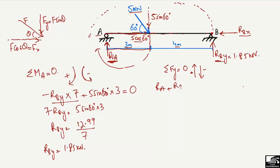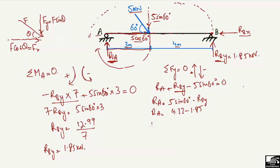The upward forces are R_A and R_BY, and the downward force is 5·sin(60°). Setting all vertical forces equal to zero: R_A + R_BY − 5·sin(60°) = 0. Substituting R_BY = 1.85 kN: R_A = 5·sin(60°) − 1.85 = 4.33 − 1.85 = 2.48 kN. So the support reaction at point A is 2.48 kN.